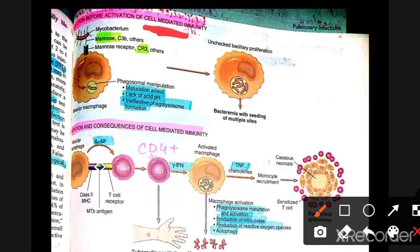The main role of macrophages is to act as the primary defense. In the lungs, there are alveolar macrophages. When we breathe in respiratory droplets containing TB bacteria, these particles are taken up by the macrophages present in the alveoli.